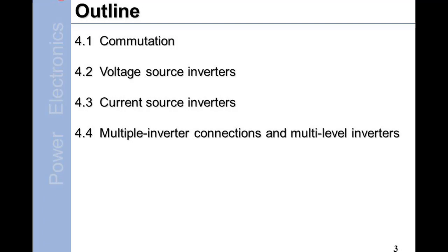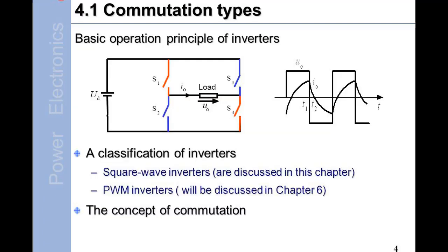4.3 Current Source Inverters, 4.4 Multiple Inverter Connections and Multi-Level Inverters. Section 4.1: Commutation Types. Basic operation principle of inverters. A classification of inverters.